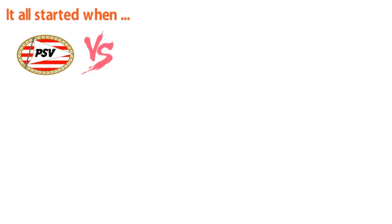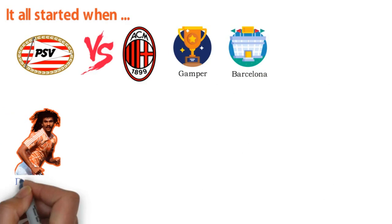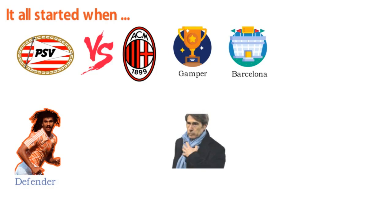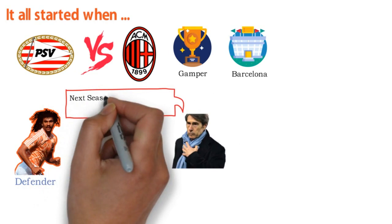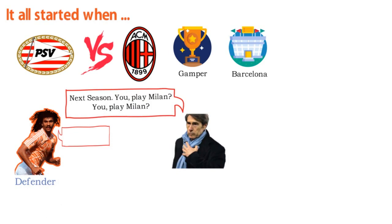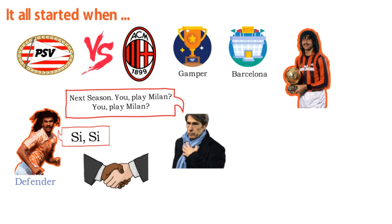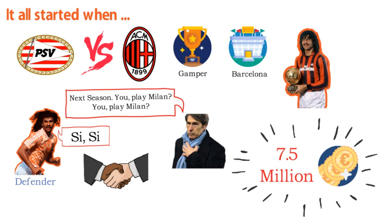It all started when PSV met AC Milan in the Gamper Trophy in Barcelona. Ruud was playing in defense and made quite an impression, because after the game the Italian technical manager Ariado Breda looked him up in the dressing room and asked him: 'Next season you play Milan?' Ruud answered: 'Sì, sì.' Months after, Ruud was transferred to AC Milan in a record transfer at the time of 7.5 million euros.